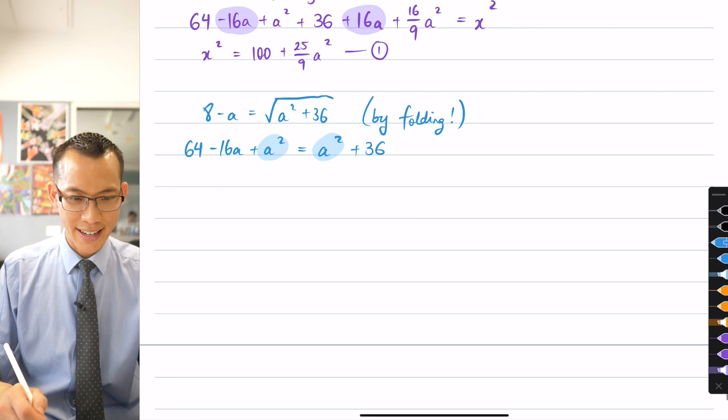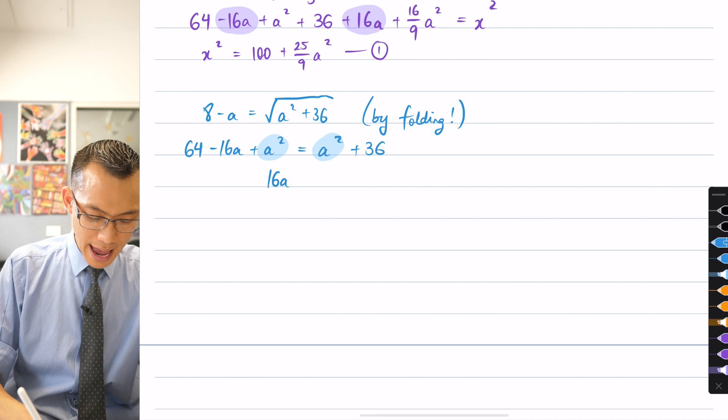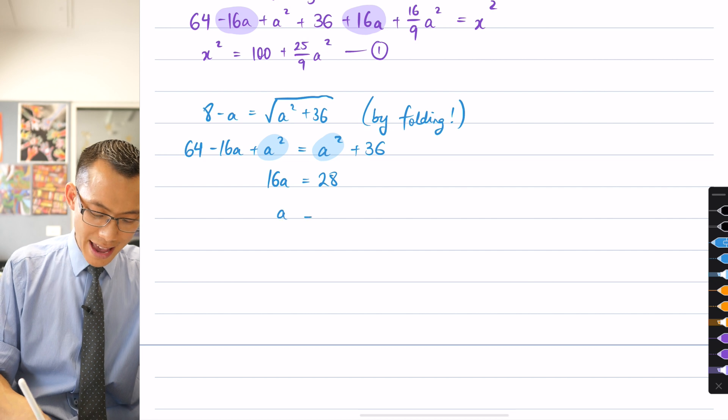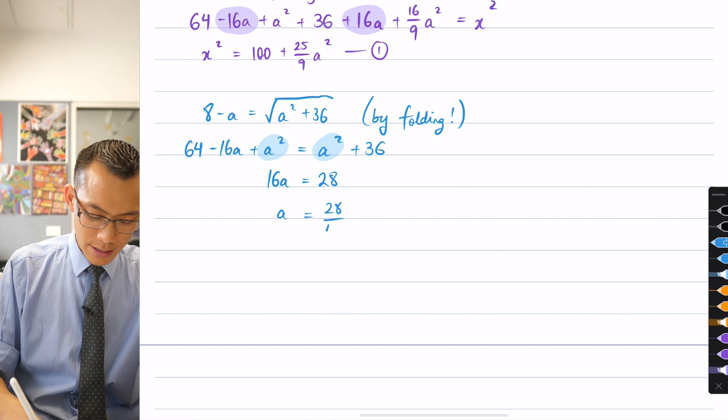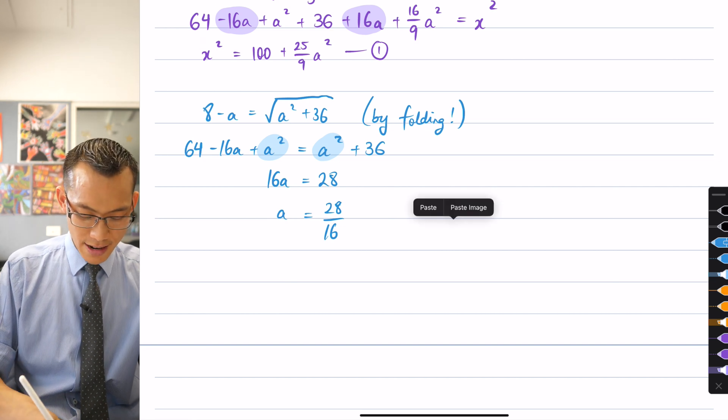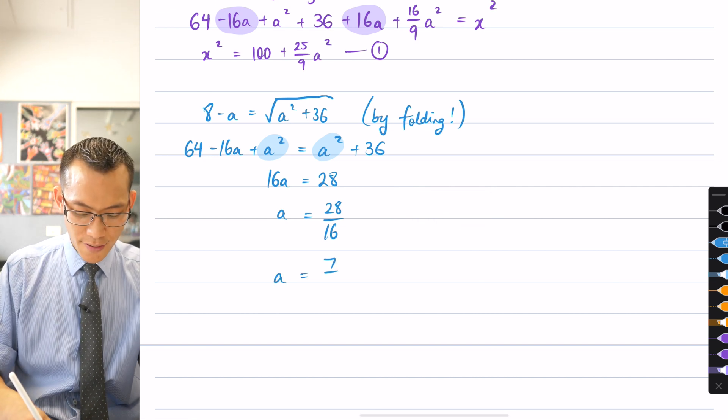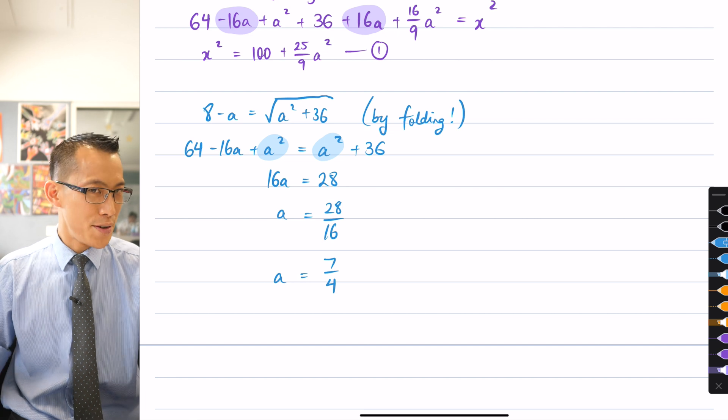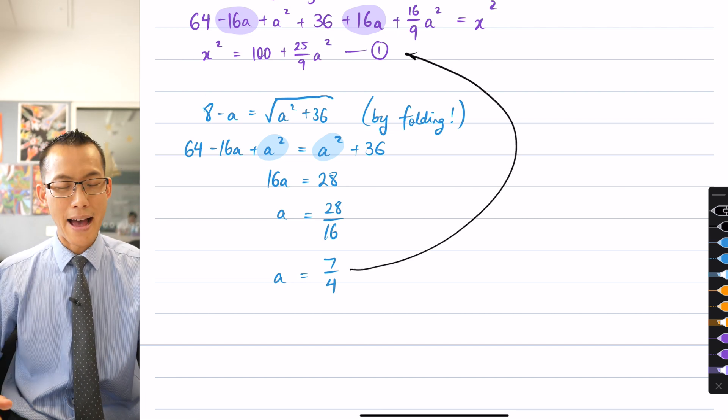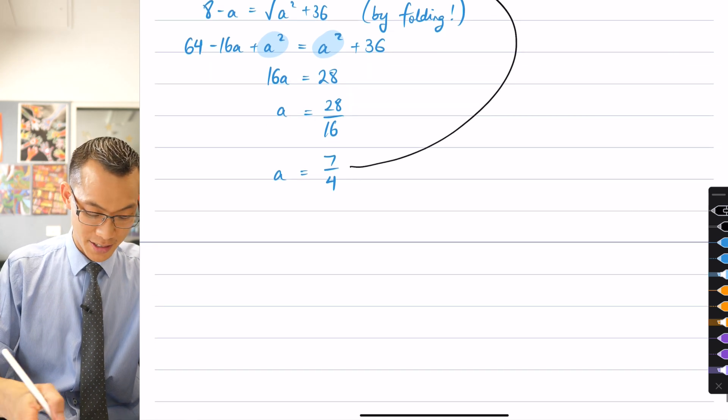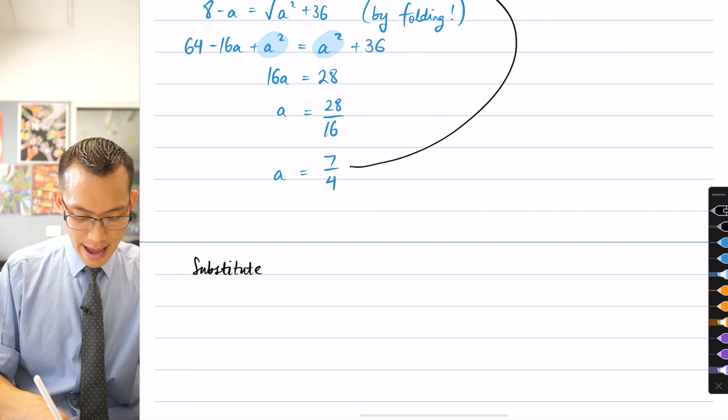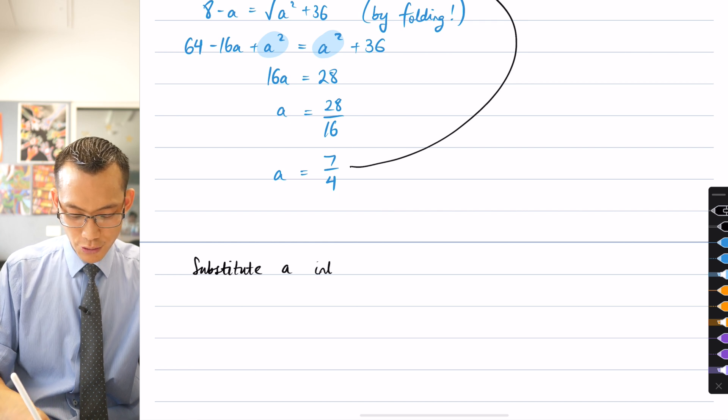And so what do I get here? I'm going to get 16A equals 64 take away 36 is 28, so A is 28 on 16. You can see that there is a common factor of 4 on the numerator and the denominator, so I get 7 over 4, and I'm pretty much there. All I need to do is to take this value of A and substitute it back into that equation 1 here.